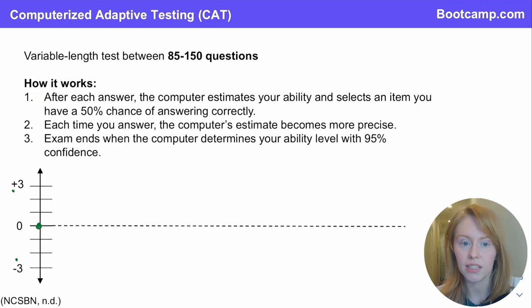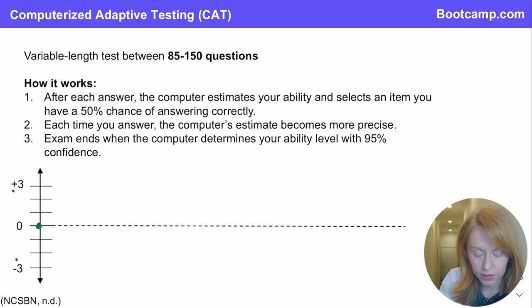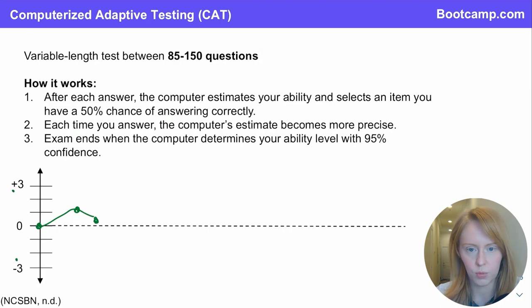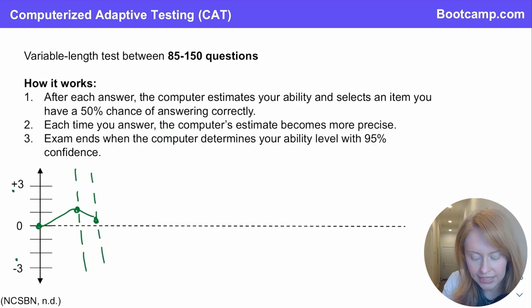So let's say in this example I answered the first question correctly. Now it's going to give me a higher ability level question because it estimates that I might have a higher ability level, but maybe it was a fluke and I get the next one wrong, so it gives me an easier question at a lower ability level. At first, the computer is very uncertain about this estimate — I've only answered one or two questions, so this uncertainty bar is really broad. They can't say with certainty yet that I'm above or below that passing standard. But then every time you answer, the computer's estimate becomes more precise.